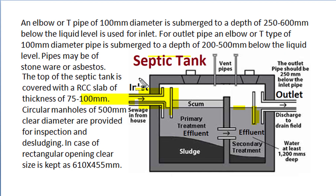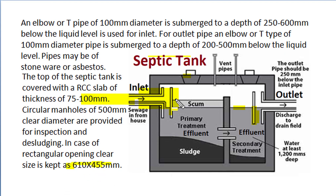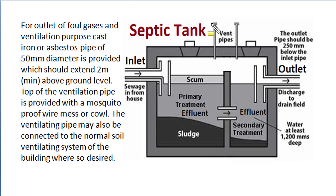A minimum freeboard of around 300 mm should be provided above top water level. The top of the septic tank is covered with an RCC slab of thickness 75 to 100 mm. For cleaning and inspection purposes, circular manholes of 500 mm diameter are provided, and they can be used not only for inspection but also for desludging or emptying of the septic tank. If rectangular openings are used in place of circular manholes, a clear size of 610 mm × 455 mm is required. For outlet of foul gases and ventilation, cast iron or asbestos pipe of 50 mm diameter is provided as vent pipes, and such vent pipes should extend at least 2 metres above ground level. The top of such vent pipe is provided with a mosquito-proof wire mesh or cowl.